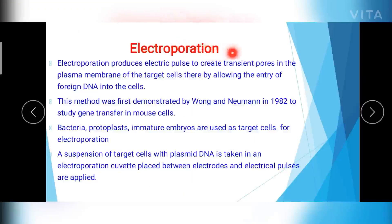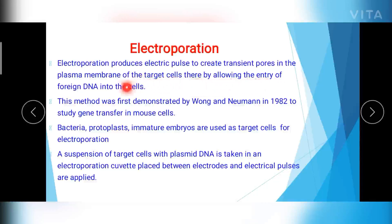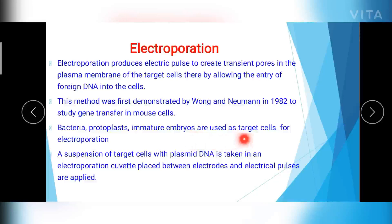Coming to the next method: electroporation. Electroporation uses devices called electroporators to produce electric pulses in order to create transient pores in the plasma membrane of the target cells. When these pores are created, it allows the entry of the foreign DNA present outside. This method was first demonstrated by Wong and Newman in the year 1982 to study gene transfer in mouse cells. The target cells preferred for electroporation include bacteria, protoplasts, and immature embryos.